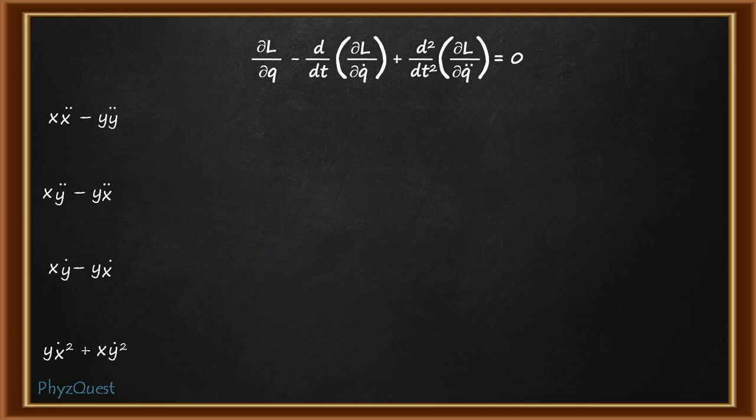So what we have to do here is we don't have the Lagrangian actually given but we have this term. So we have to test each of the four terms in this equation. When we operate those terms in this equation which of the term gives an ultimate answer of zero will be our answer.